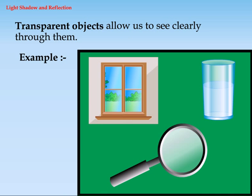Transparent objects allow us to see clearly through them. Example: glass.